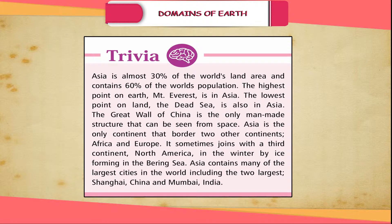Trivia: Asia is almost 30% of the world's land area and contains 60% of the world's population. The highest point on Earth, Mount Everest, is in Asia. The lowest point on land, the Dead Sea, is also in Asia. The Great Wall of China is the only man-made structure that can be seen from space. Asia is the only continent that borders two other continents, Africa and Europe, and it sometimes joins with a third continent, North America, in winter by ice forming in the Bering Sea. Asia contains many of the largest cities in the world, including the two largest — Shanghai, China and Mumbai, India.